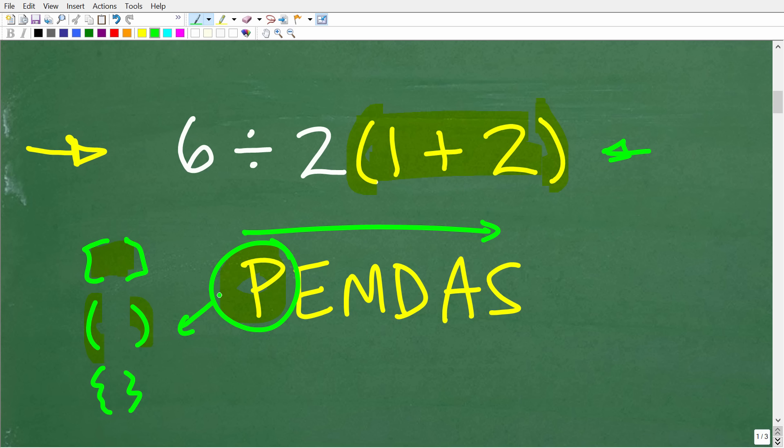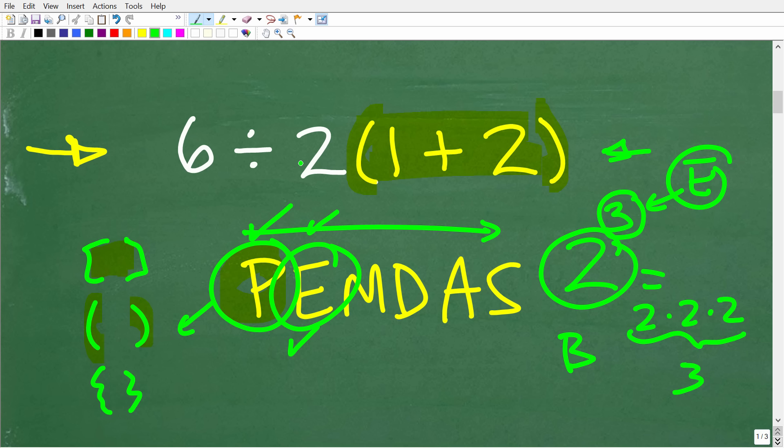So after you do everything in parentheses you're going to move on to E and E stands for exponents but you can think of this as a power. So if you have 2 to the third power this little number up here to the top right is called the exponent, this number down here is called the base. So 2 to the third power means take 2 and multiply it by itself 3 times. So if you have any powers or exponents you're going to do this next. Now not every math problem is going to have parentheses or powers but again you're just kind of scanning the problem from left to right. So here we have no power so we can move on to our next step.